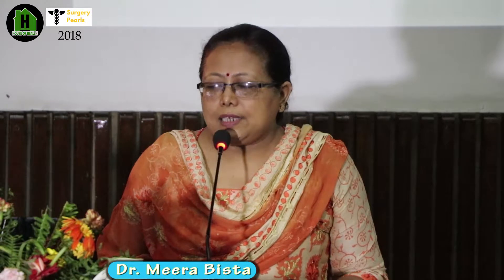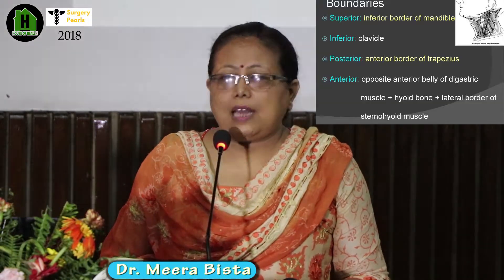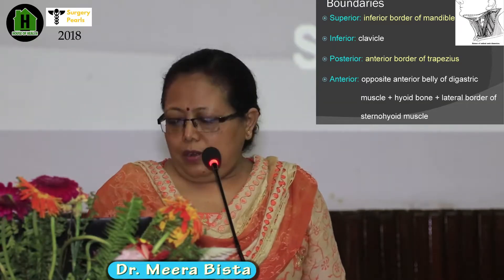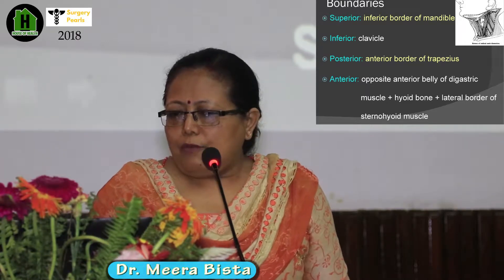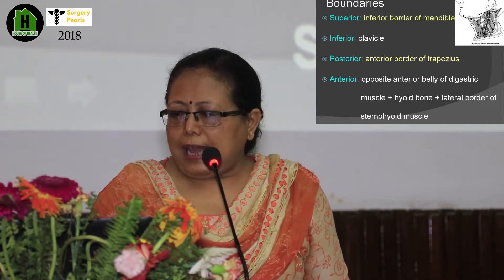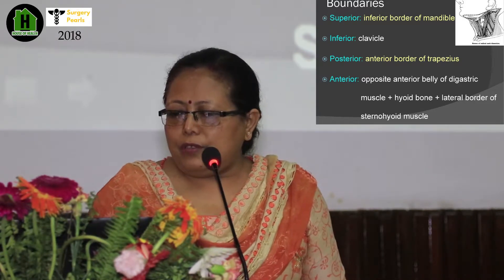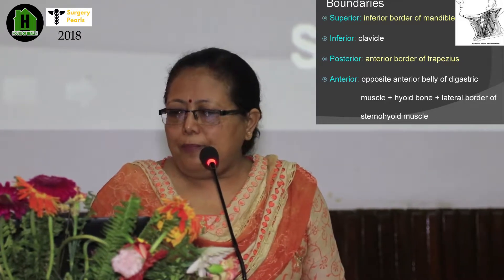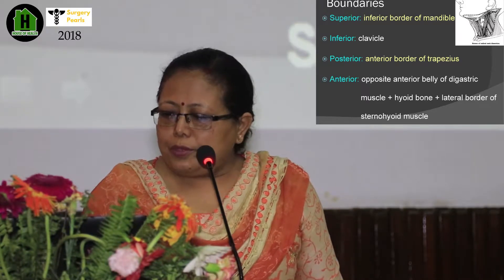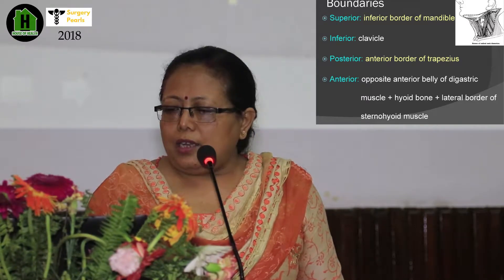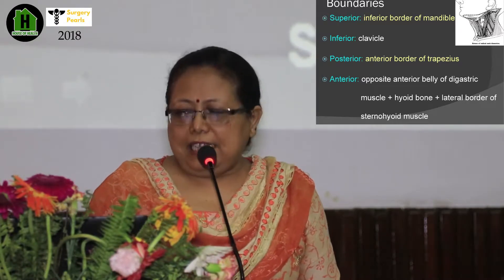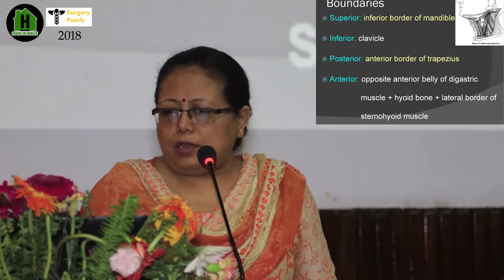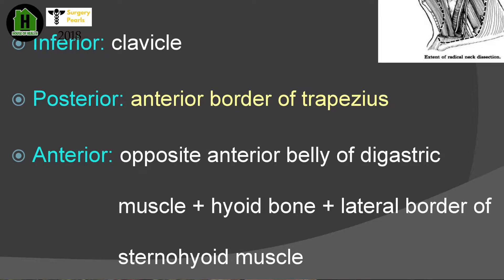Now on to radical neck dissection proper. The boundaries are: superiorly the inferior border of the mandible, inferiorly to the clavicle, posteriorly to the anterior border of the trapezius muscle, and anteriorly to the opposite anterior belly of the digastric, the hyoid bone, and the lateral border of the sternohyoid muscle — not the midline.